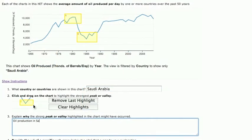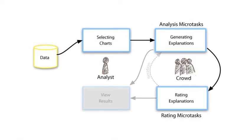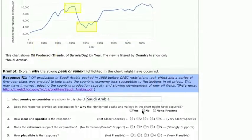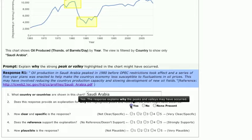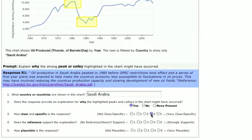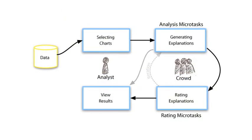Workers examine the charts and generate explanations. Other workers then rank the best explanations and identify redundant ones. The analyst receives charts with a diverse set of high-quality explanations that can drive further analysis.